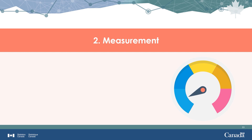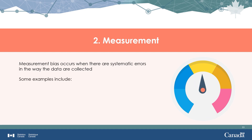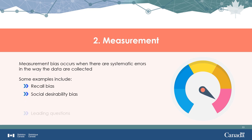The next area we will explore is measurement. Measurement bias occurs when there are systematic errors in the way the concept of interest is measured or reported. Some examples include recall bias, social desirability bias, leading questions, and faulty measurement tools.